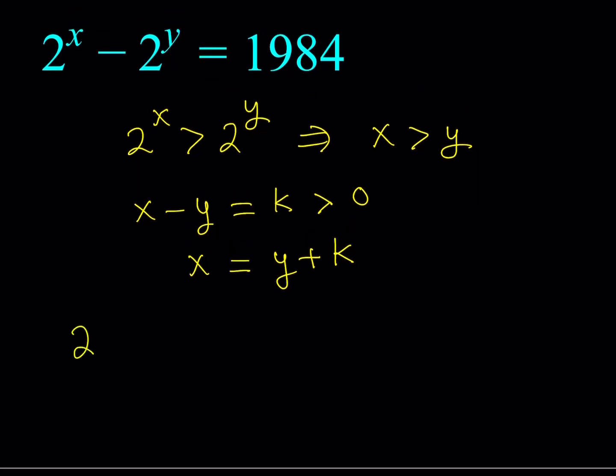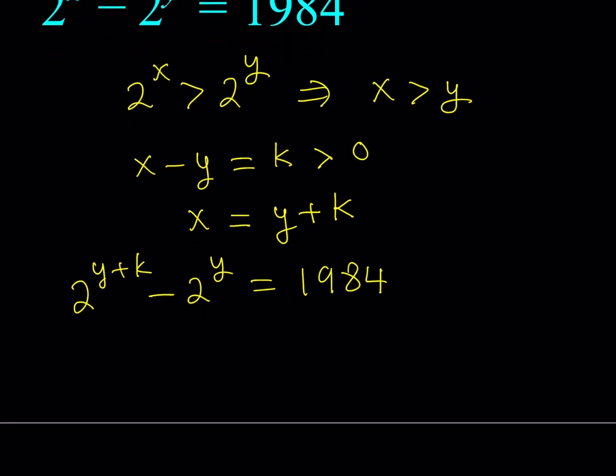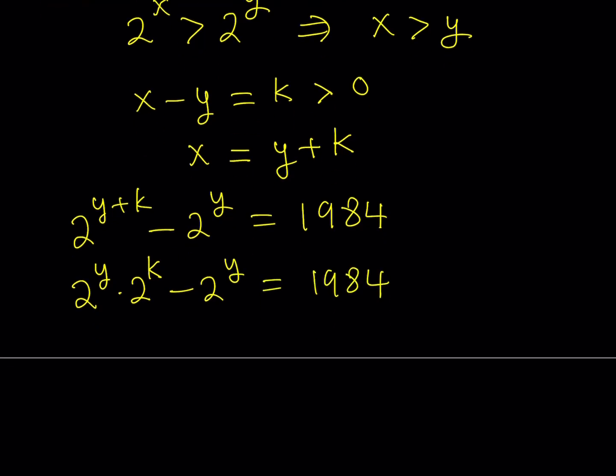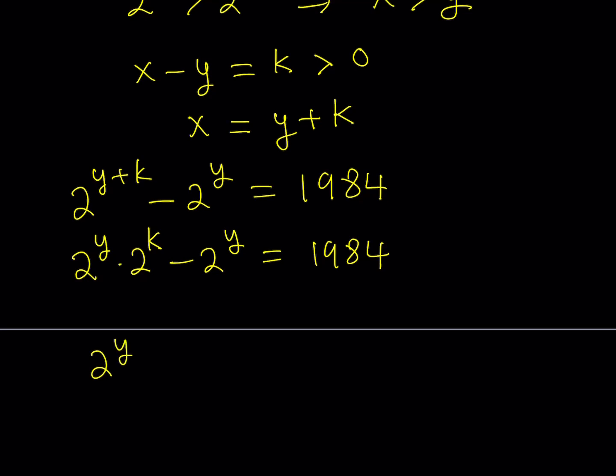Okay. So, replace x with y plus k and then minus 2 to the power y is equal to 1984. Cool. Now, this process makes this equation factorable. How? You could write the left-hand side as 2 to the power y times 2 to the power k minus 2 to the power y. And then the answer. Now, notice that 2 to the power y is a common factor. So, we can take it out. And, this gives us the following factorization.